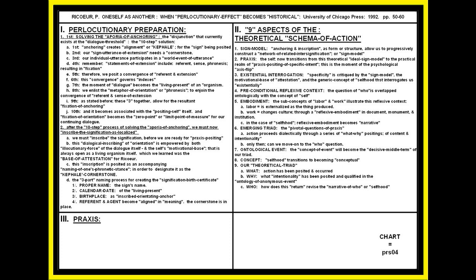We have to solve the problem of the aporia of anchoring. Ricoeur says we've got to anchor our posited sign that we're trying to work on — it has to be anchored to some kind of a trajectory, some kind of a thread of intentionality. Ricoeur says we're going to try to find a kafale, which is the Greek concept for alignment or orientation. We want to find and assign a kafale orientation for our posited sign — we want our sign utterance of extension to gain a cornerstone of alignment.